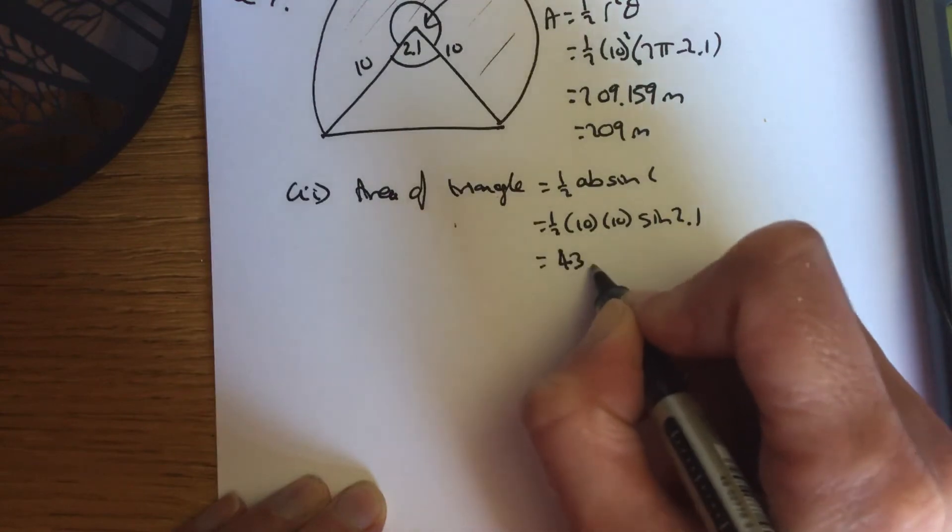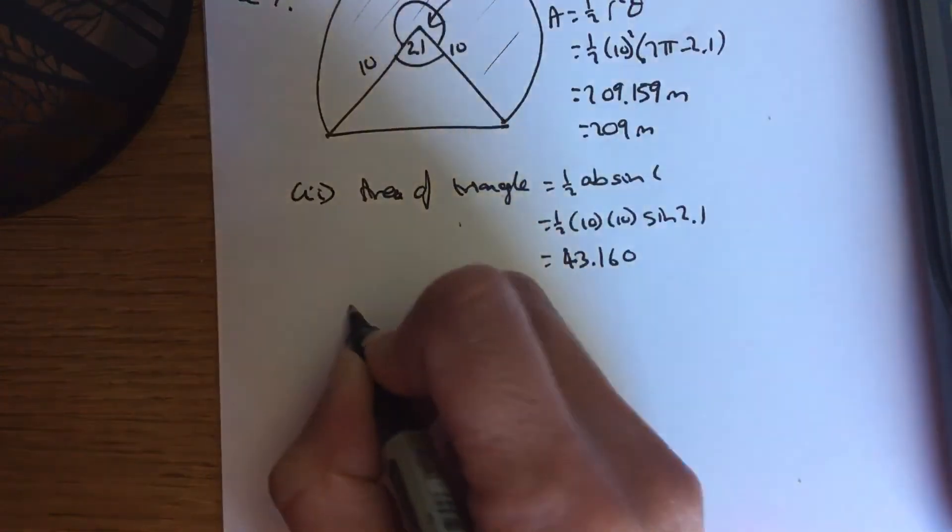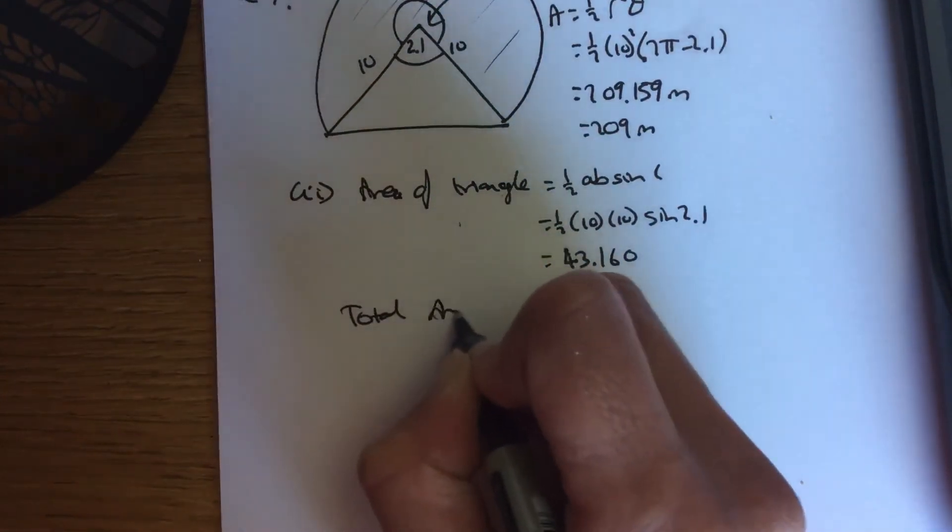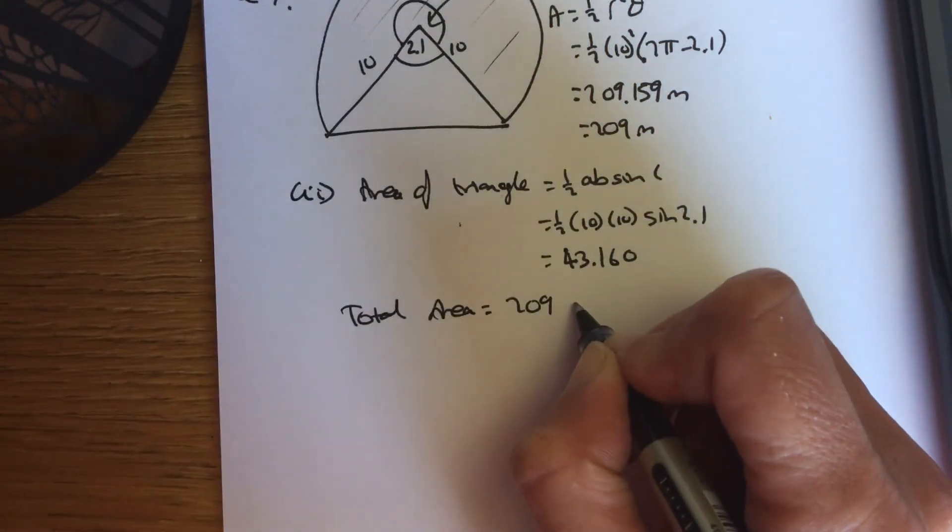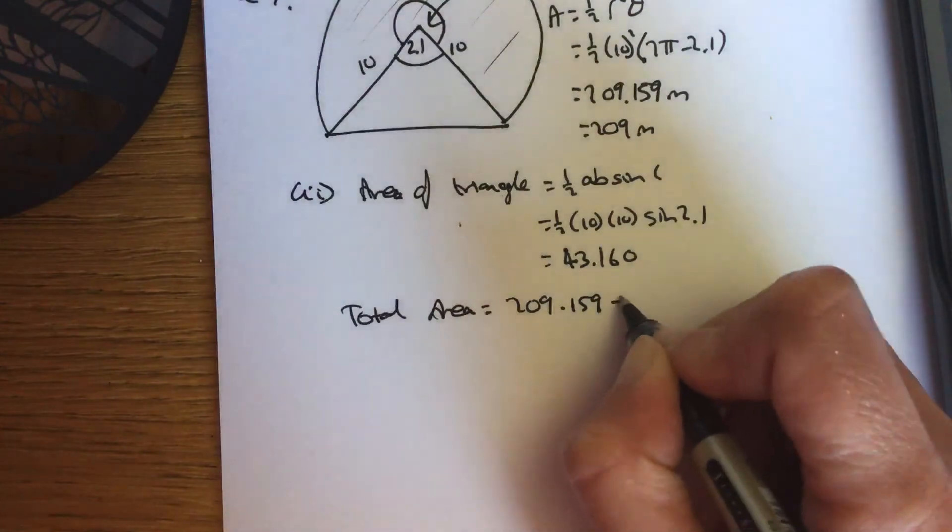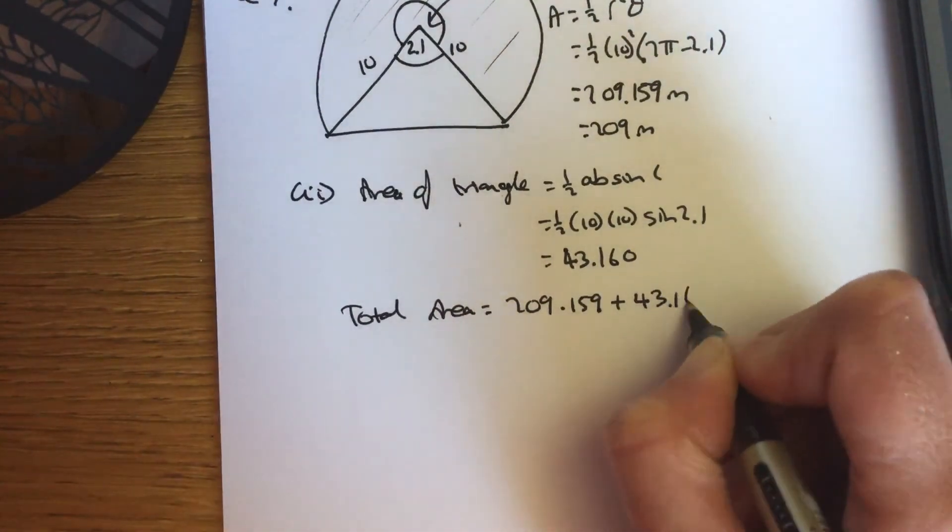Plugging that into the calculator gives you 43.160. So your total area is a sector 209.159 plus the triangle 43.16.